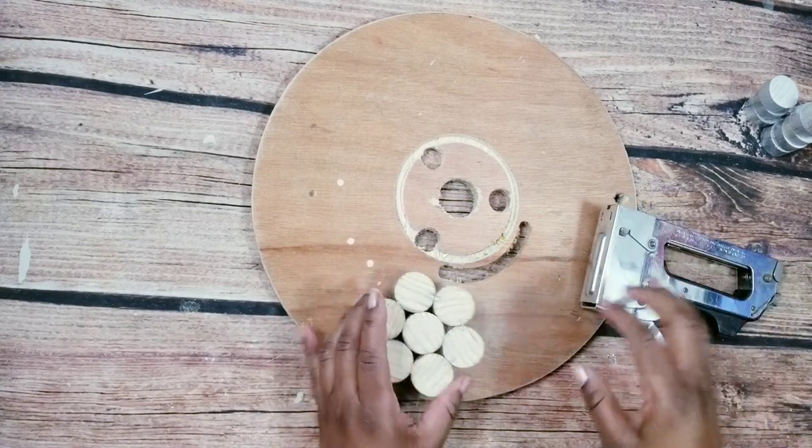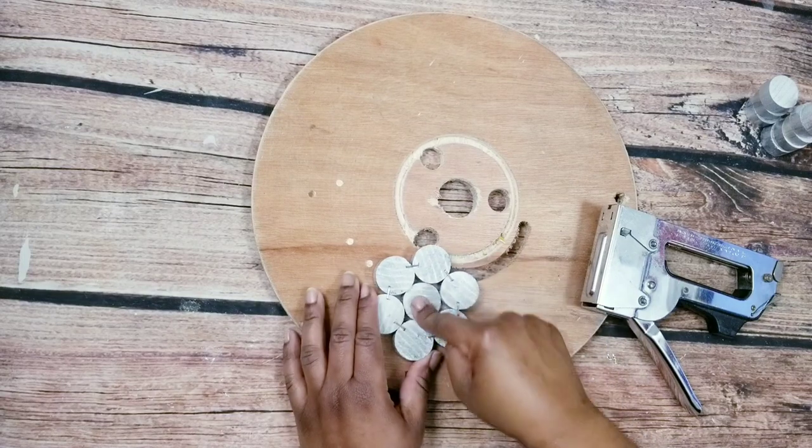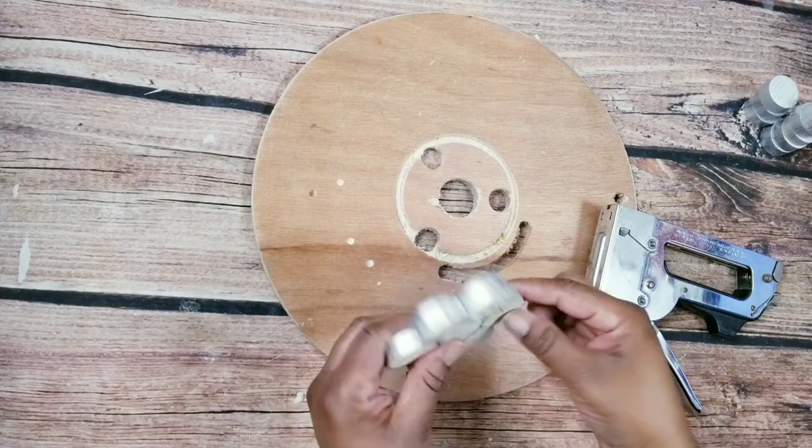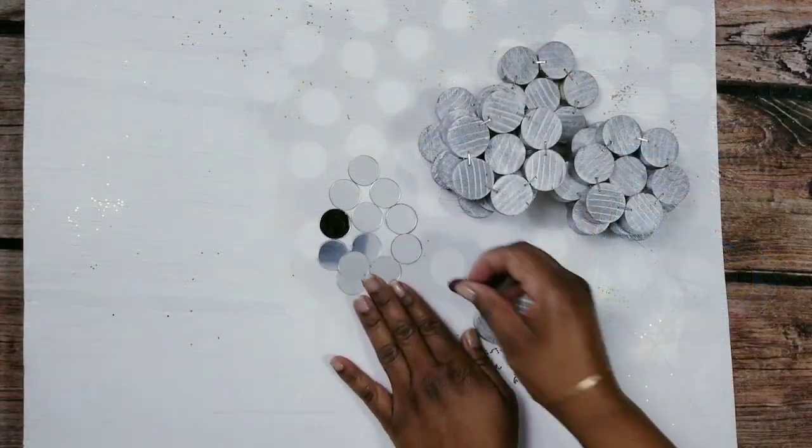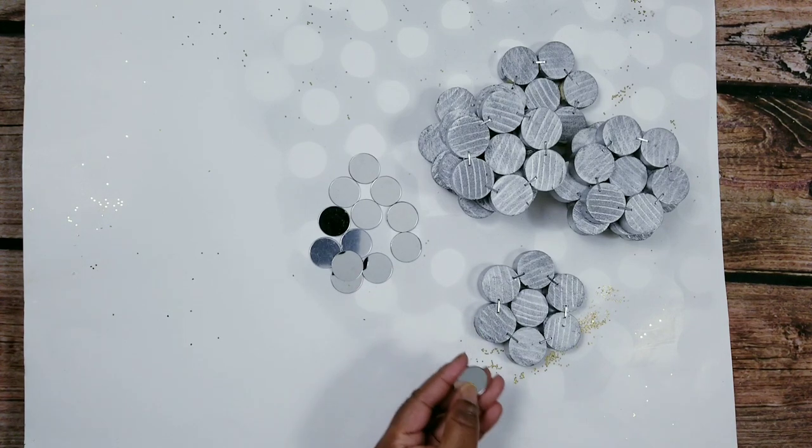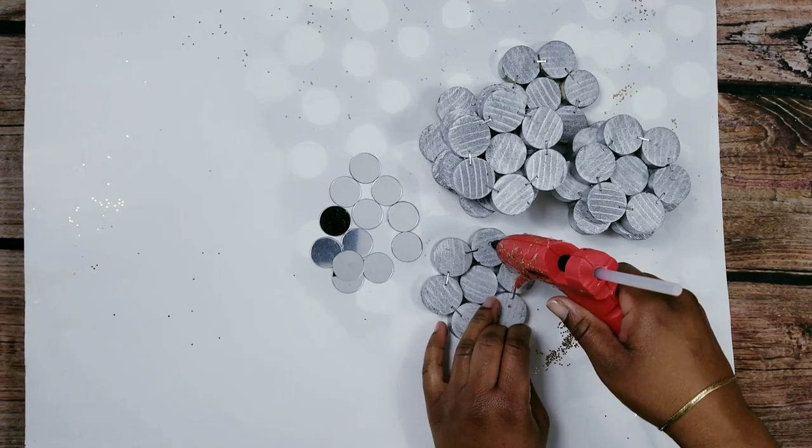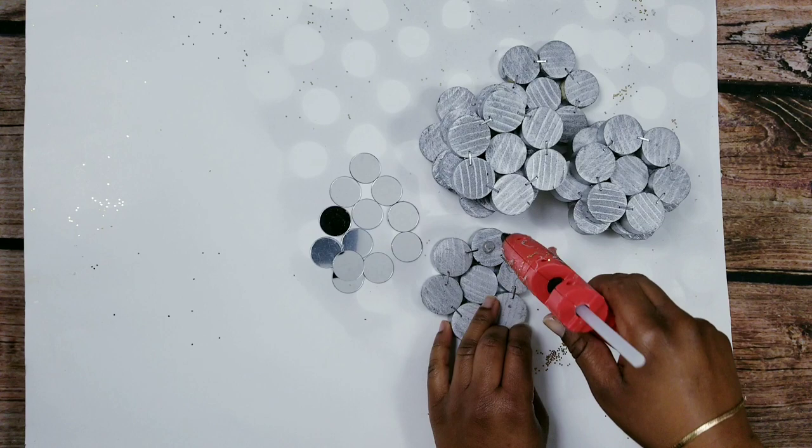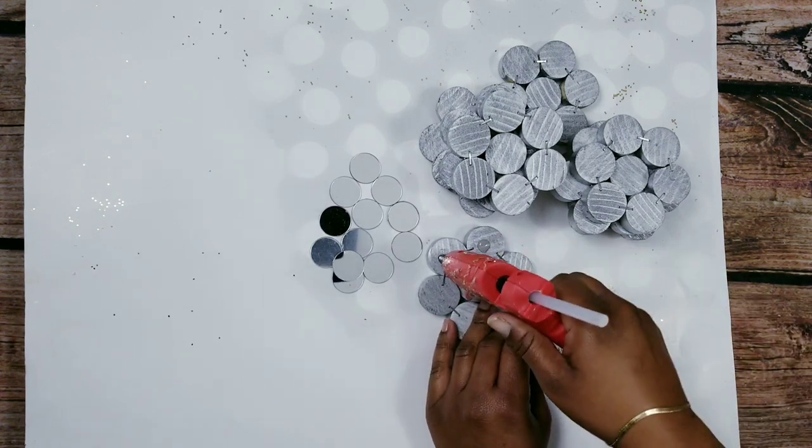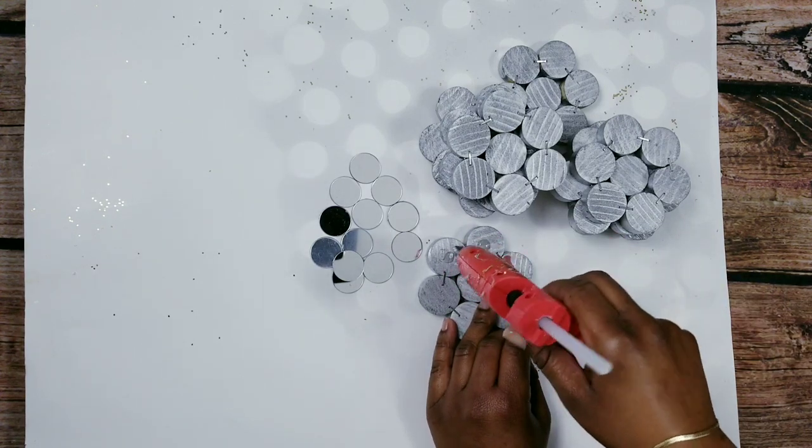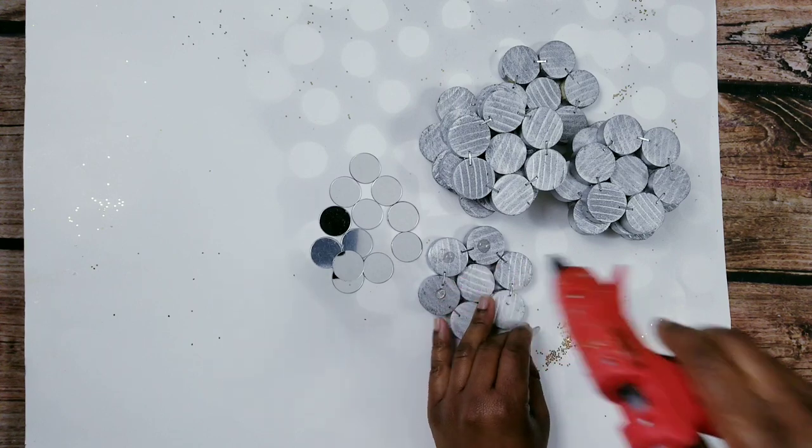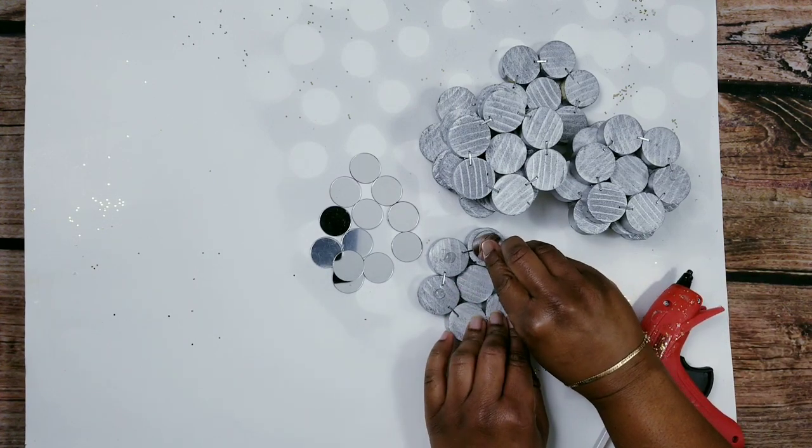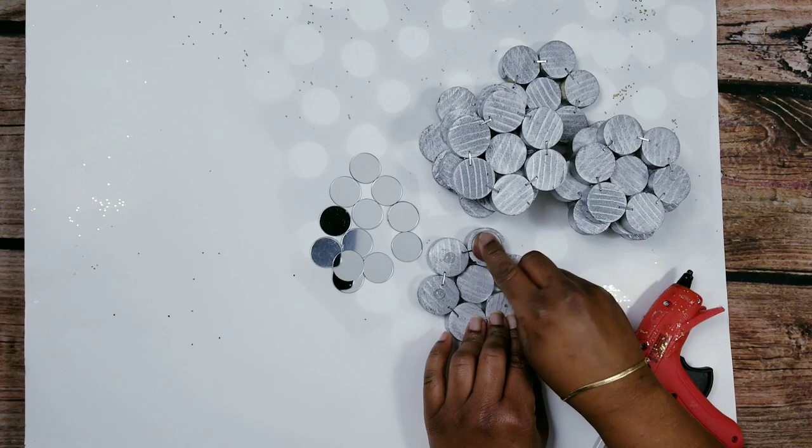So now that it's nice and sturdy, I'll go ahead and apply my mirrors and I'm going to be using these one inch mirrors that I have. I'll leave a full list of all the items I use in the description box below and the link to where you can buy them if you'd like to. So I'm just going to be using my hot glue for this part and I'm trying to line up my mirrors just directly in the center of the wooden piece.